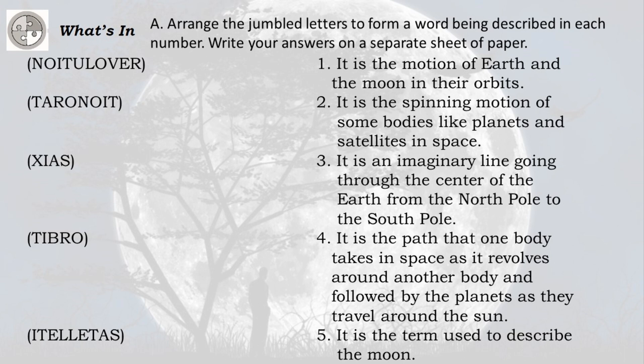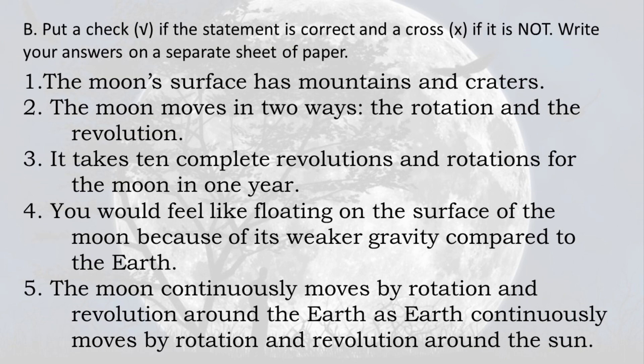Activity A: Arrange the jumbled letters to form the word being described in each number. Write your answers on a separate sheet of paper. 1) It is the motion of Earth and the moon in their orbits. 2) It is the spinning motion of bodies like planets and satellites in space. 3) It is an imaginary line going through the center of the Earth from the North Pole to the South Pole. 4) It is the path that one body takes in space as it revolves around another body. 5) It is the term used to describe the moon.